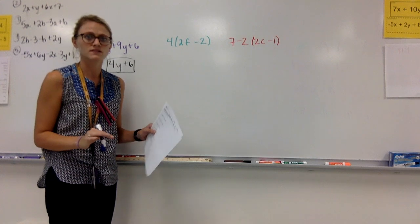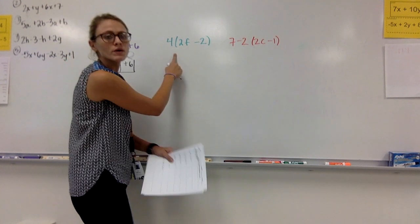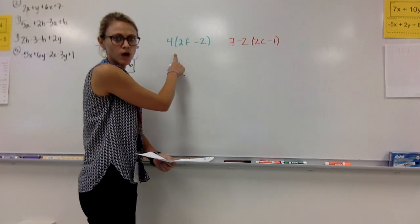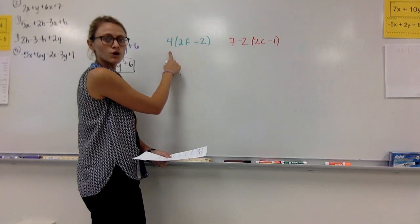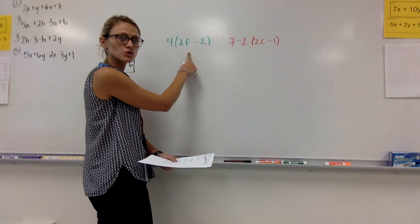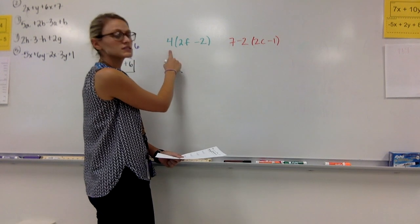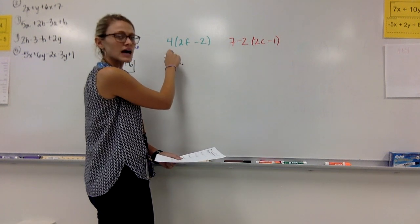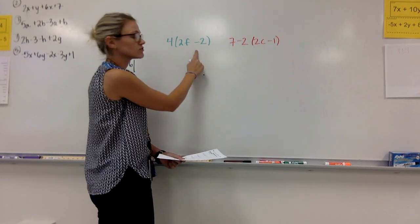We should be good with that. We should also be good with just a basic distribution problem, okay? So 4 and in parentheses 2f - 2. We should know to distribute this 4. Whatever's on the outside is distributed to whatever's on the inside.